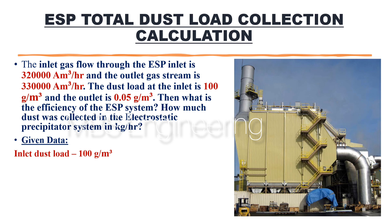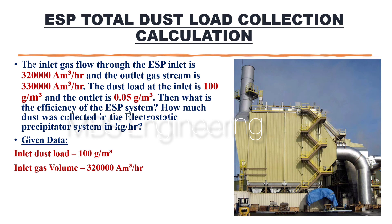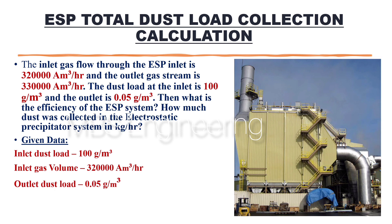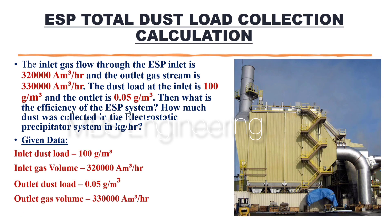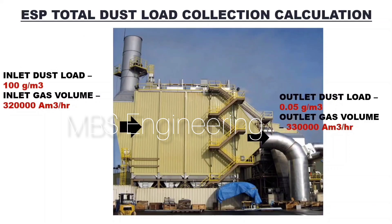Given data: As per the above scenario, the below parameters are given. The inlet dust load concentration is 100 grams per cubic meter. The inlet gas volume is 3,20,000 cubic meters per hour. The outlet dust load concentration is 0.05 grams per cubic meter. The outlet gas volume is 3,30,000 cubic meters per hour. Please refer to the below snaps to understand how to calculate the ESP total dust load collection in the given inlet and outlet dust concentration and gas volume.